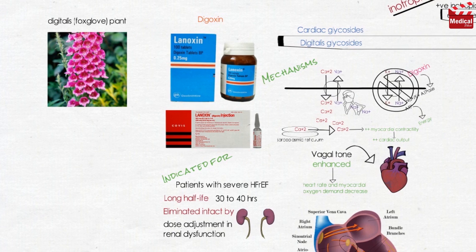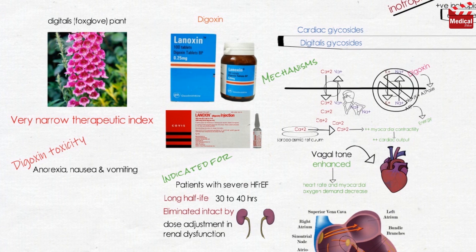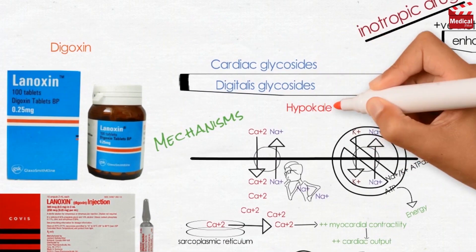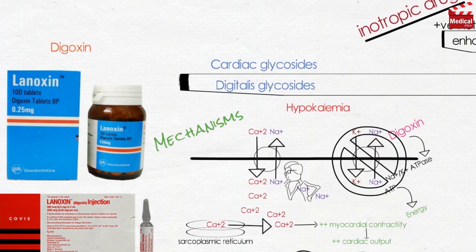It is very important to know that digoxin has a very narrow therapeutic index, and digoxin toxicity is one of the most common adverse drug reactions leading to hospitalization. Anorexia, nausea, and vomiting may be initial indicators of toxicity. Patients may also experience blurred vision, yellowish vision or xanthopsia, and various cardiac arrhythmias. Decreased levels of serum potassium, known as hypokalemia, predispose a patient to digoxin toxicity, because digoxin normally competes with potassium for the same binding site on the sodium-potassium ATPase pump.